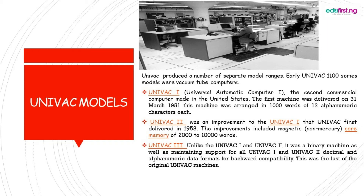The third model is UNIVAC 3, Universal Automatic Computer 3. It is the integration of the first UNIVAC and the second model of the UNIVAC. It was generated and invented with the help of binary machines, which consist of decimal and alphanumeric data for backward compatibility. These are the three main models in UNIVAC: UNIVAC 1, UNIVAC 2, and UNIVAC 3.